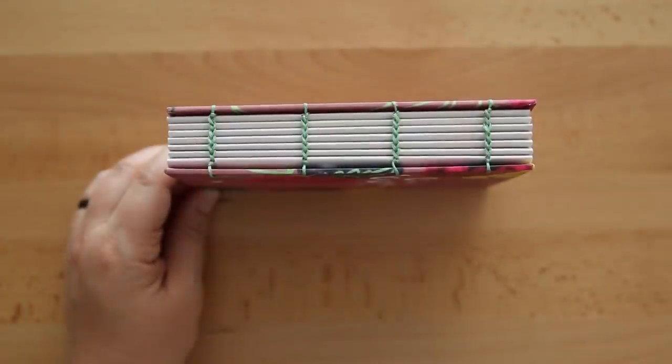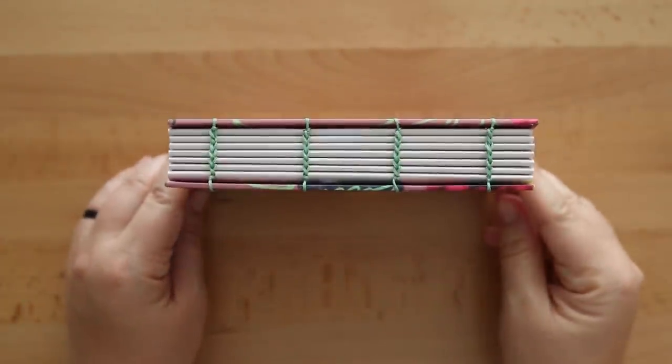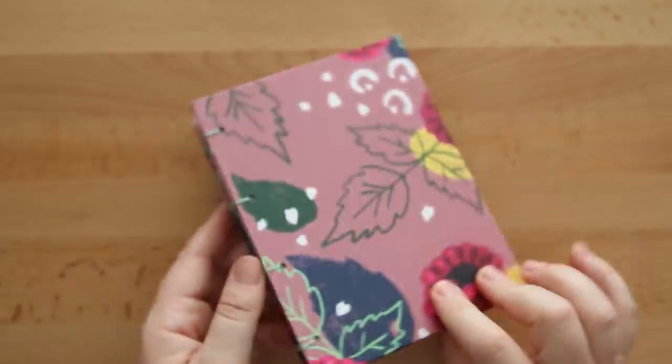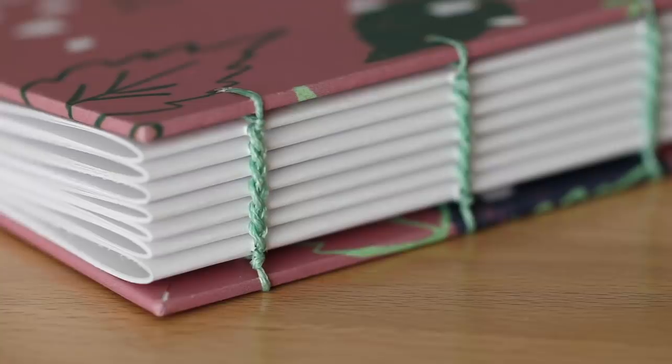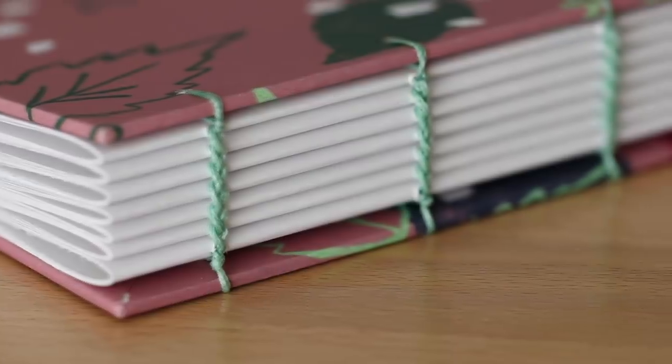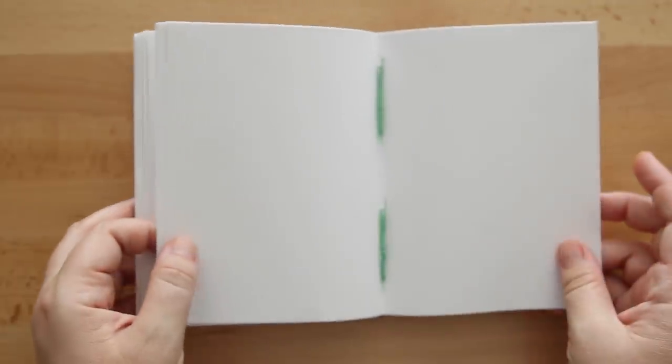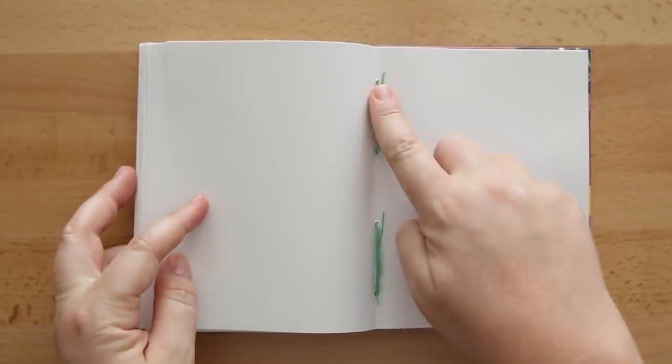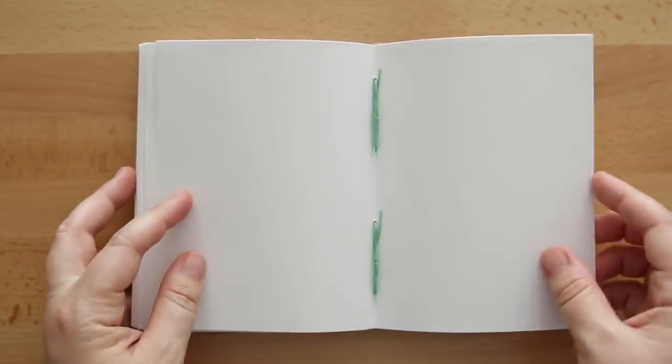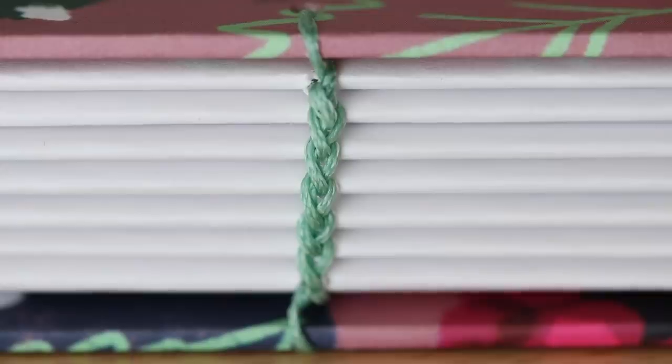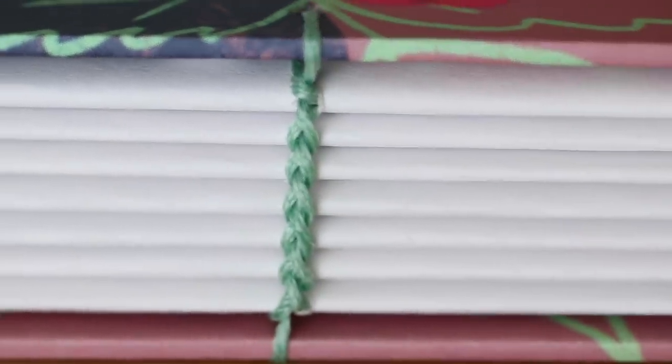Here's the final result showing you what two sections of a double needle coptic stitch looks like in one book. After making these, I have a couple of tips to share with you. You may notice the last signature you stitch on has four lines of thread in the middle, and it can make the signature a little bit bulky. I'm not sure how to get around that, so I like to leave that signature on the bottom of the book so the weight of the book kind of presses down that bulky signature.